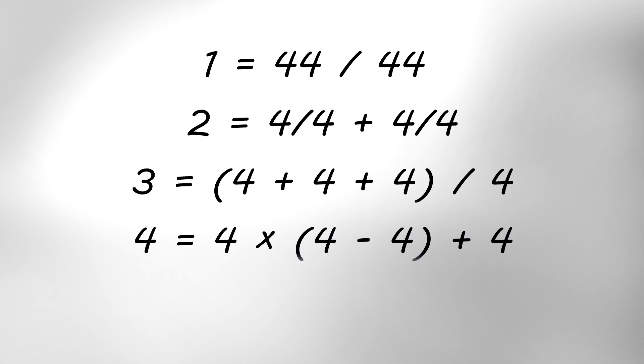4 equals 4 times 4 minus 4, which gives us 0, plus 4. 5 is equal to 4 times 4 plus 4, which is 20, divided by 4.